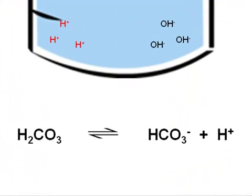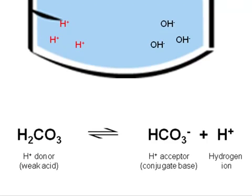At the bottom of the screen is an example of a buffer. Buffers are made up of a weak acid, which is a proton donor, and its conjugate base, which is a proton acceptor.